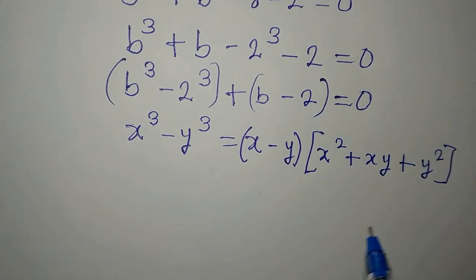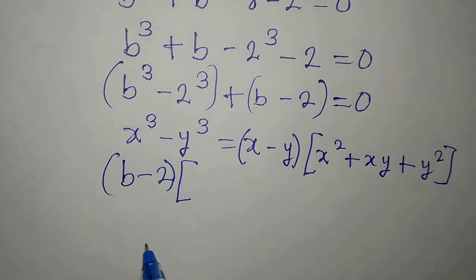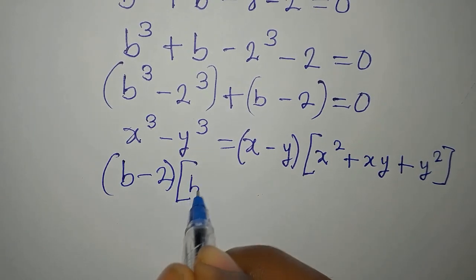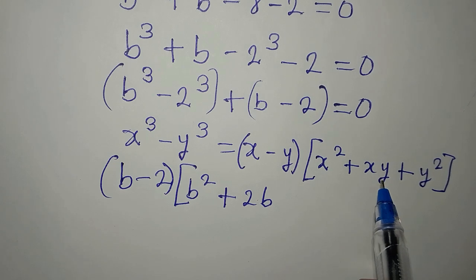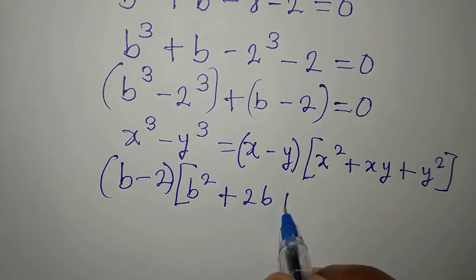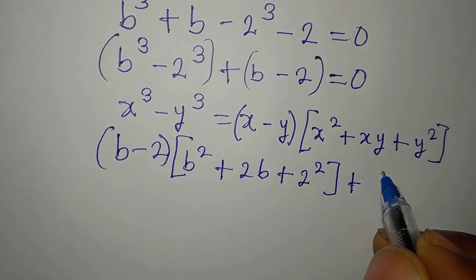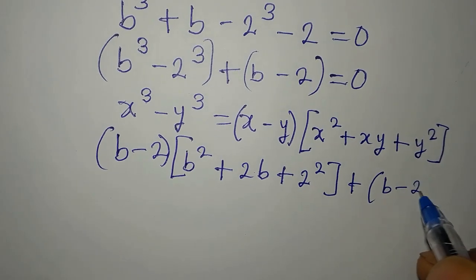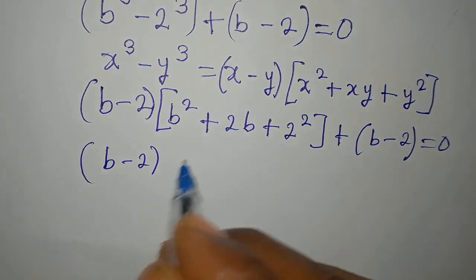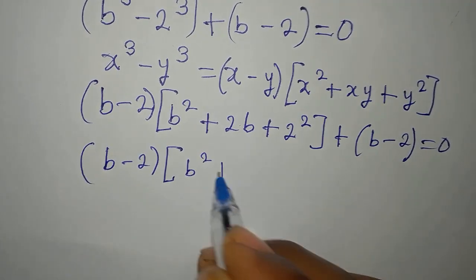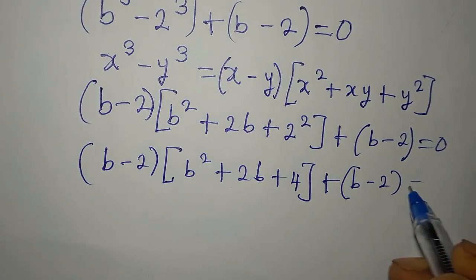Applying the identity, x minus y becomes B minus 2. In the next bracket, x squared becomes B squared, xy becomes B times 2 which is 2B, and y squared becomes 2 squared which is 4. So we get B minus 2, times B squared plus 2B plus 4, then plus B minus 2, all equal to 0.